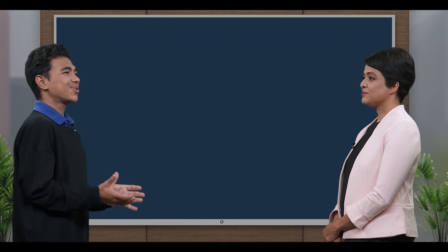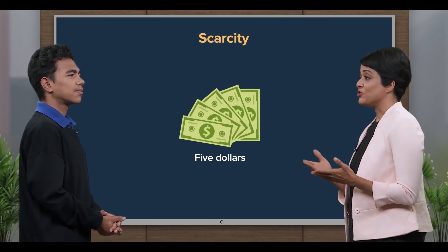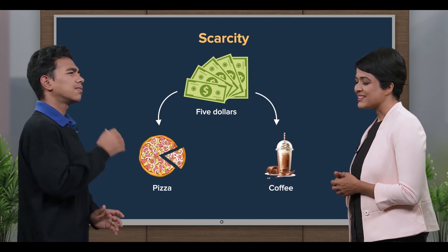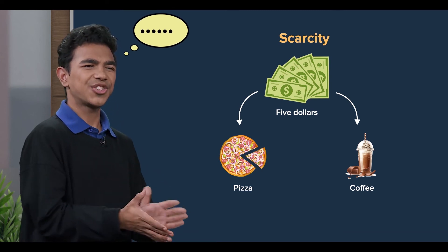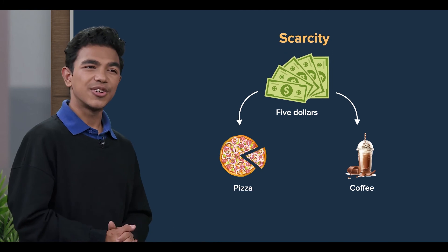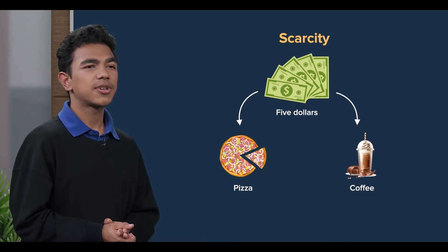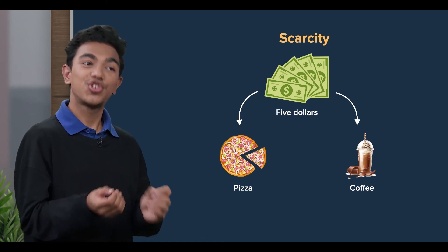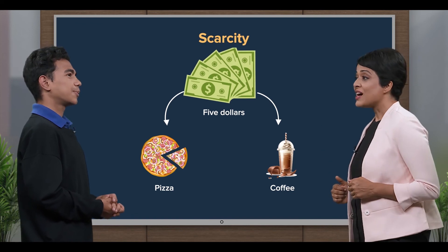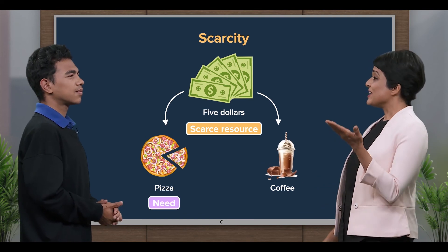Oh, so that's what scarcity means! Yes — if you had enough money to fulfill all your wants and needs, then you would not have to choose what to get. So, because I only have five dollars, I can't have the pizza and the coffee. To have one, I must give up the other — I must choose. Indeed. In your case, the five dollars is a scarce resource; the pizza is your need, while the coffee is your want.